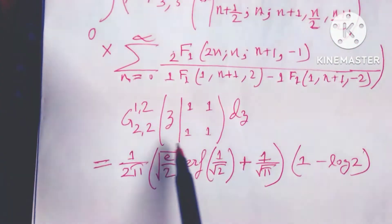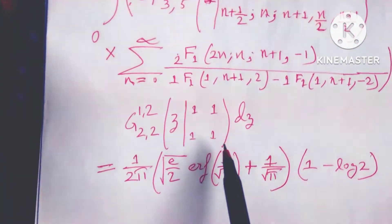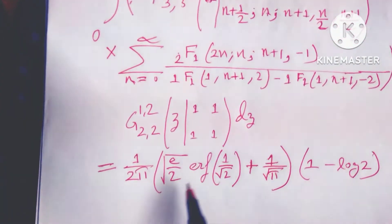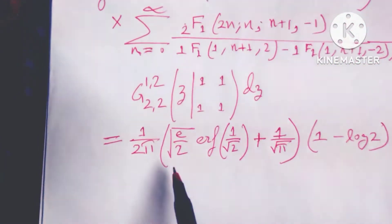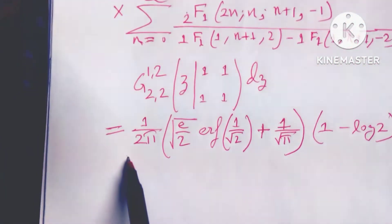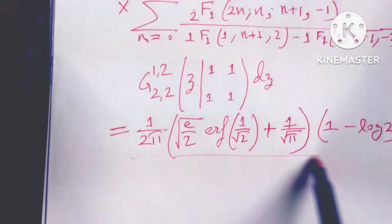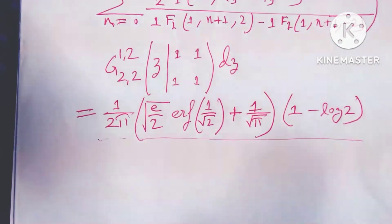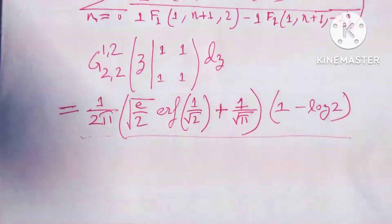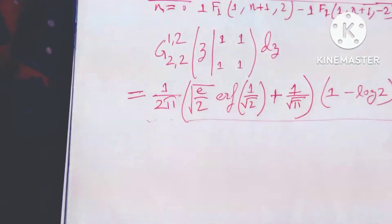So g(1 to 2) to z(1,1) djt. So I have to prove this derivative. So friends, how can I prove this kind of problem?